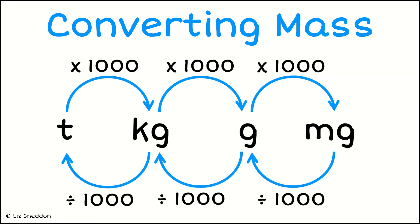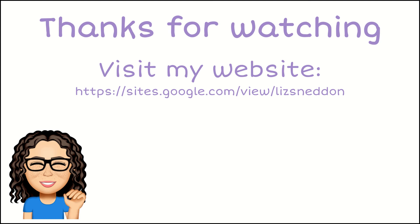It's a similar kind of diagram if we are converting mass. We go from tons to kilograms to grams to milligrams. The nice thing with mass is all of these conversions require multiplying or dividing by 1,000 — other than that, the conversion method is exactly the same. Thanks very much for watching.